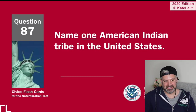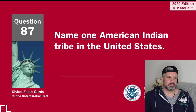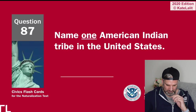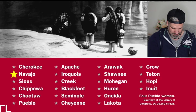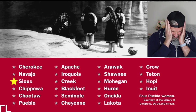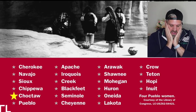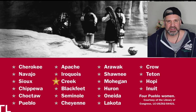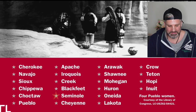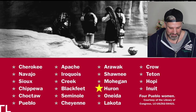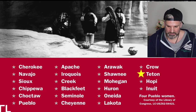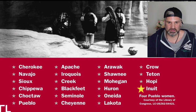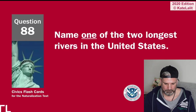Name one American Indian tribe in the United States. I can't think of one — Eagle tribe? Cherokee, Navajo, Apache — that's what I was trying to think, Apache, and I kept thinking that's a helicopter. Chippewa, Crow, Choctaw, Pueblo, Iroquois, Creek, Blackfeet, Seminole, Cheyenne, Arawak, Shawnee, Mohegan, Huron, Oneida, Lakota, Teton, Inuit.